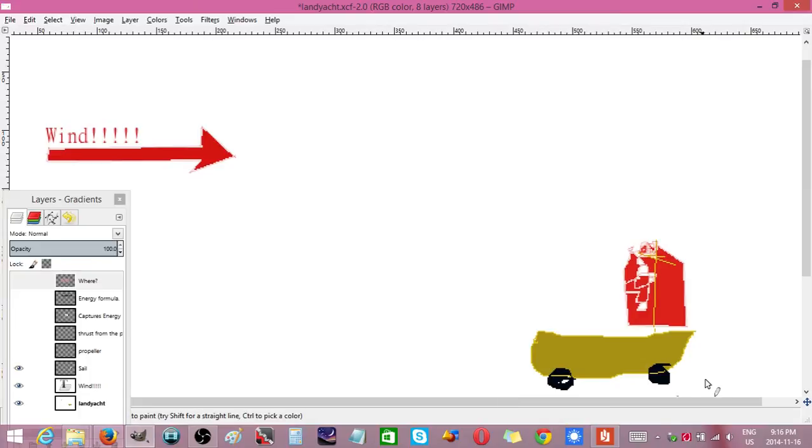This is a land yacht - it's got wheels and a sail. Here's the following wind, and it can never go as fast as the wind when the wind is following it and it's going straight downwind.